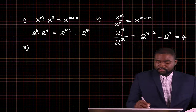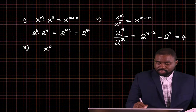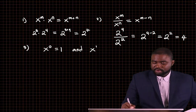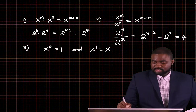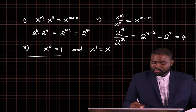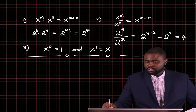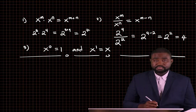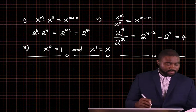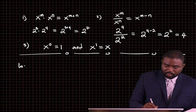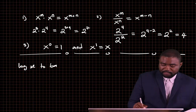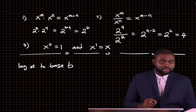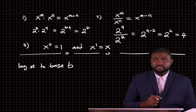We also saw that any number raised to the power 0 is 1, and any number raised to the power 1 is itself. Now, these rules will become very handy in logarithms. Keep in mind that the log of x to base b is simply the power to which b must be raised in order to give x.